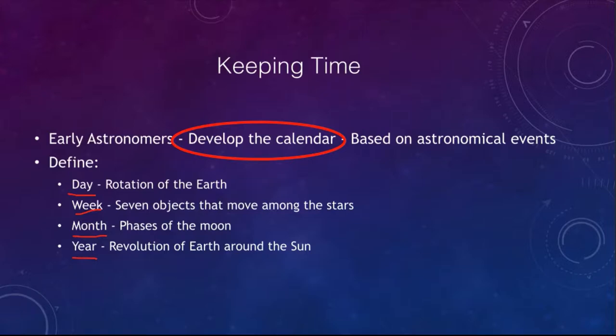The year is the revolution of the Earth around the Sun. That's not something we can see directly, but we can see changes in the patterns of the constellations over time, and those changes occur on a yearly basis, giving us our measurement of a year.